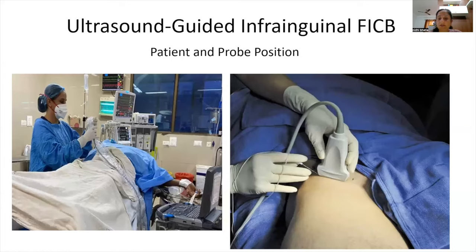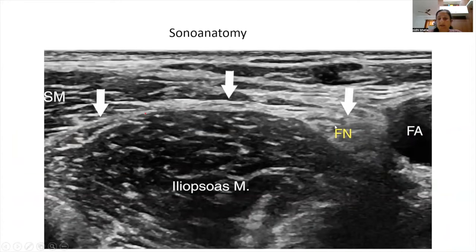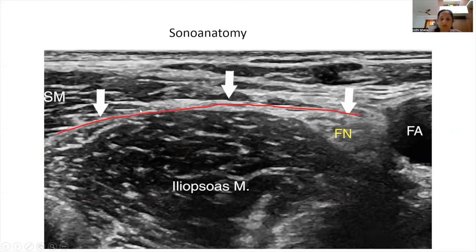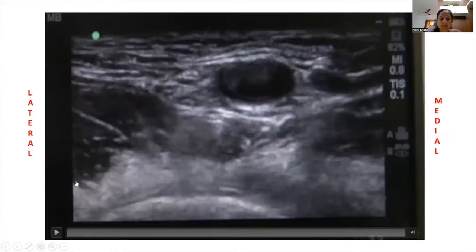With the probe placed just below the inguinal crease transversely, the sonoanatomy shows — from medial to lateral — the femoral vessels. Using the VAN mnemonic: femoral vein, femoral artery, and just lateral to the artery is the hyperechoic femoral nerve, sandwiched between the artery and the belly of the iliopsoas muscle. Above the iliopsoas is the fascia iliaca — our plane of interest — and above this the sartorius muscle. The needle enters from lateral to medial, targeting the plane between the iliopsoas and sartorius.